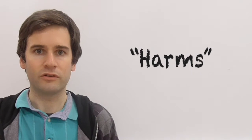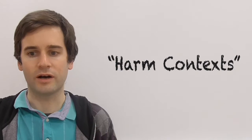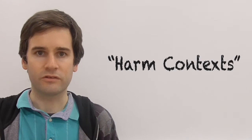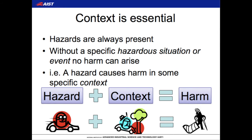A harm is quite easy to understand — it is simply something that happens to injure a person or the environment. For example, if you have a car crash then you injure the driver; that injury is the harm. But how do we get from the hazard to the harm? This is where we use context, or harm context in the case of SafeML. This is the circumstances which cause people or property to be exposed to one or more hazards and therefore harm to be caused. In our example, the context is the car crashing into a tree. Context is very important in SafeML — without it, it's impossible for a hazard to cause harm. You need some kind of hazardous situation that can allow the harm to occur.